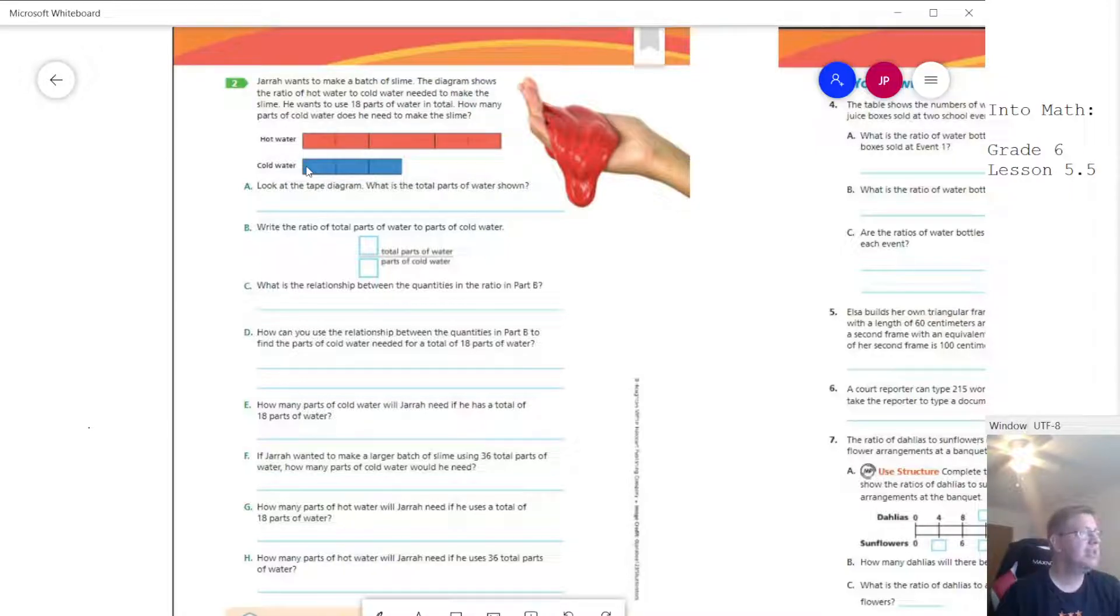So we want to make a batch of slime and we have a ratio of hot water to cold water. As is usual, I have little bits missing on the electronic copy of my book. So let's add those in to make sure that we can see that clearly.